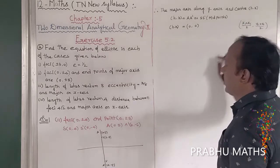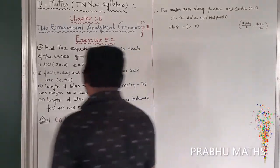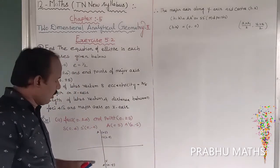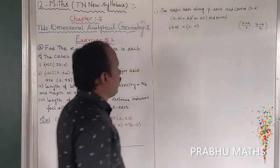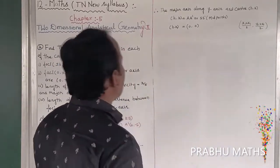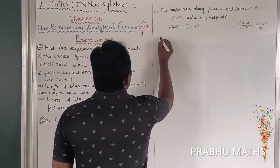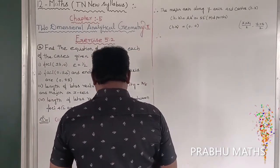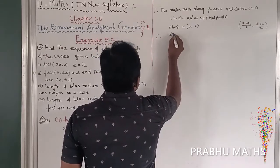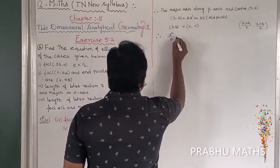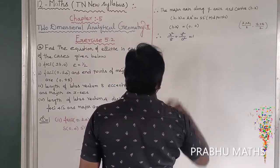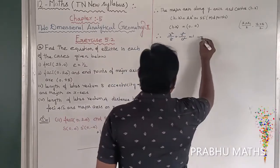For any values — suppose you take S, S' or A, A' — the value gives h, k equal to (0, 0). So the general equation of the ellipse is: x² divided by b² plus y² divided by a² equals 1. That is the general equation — equation number 1.